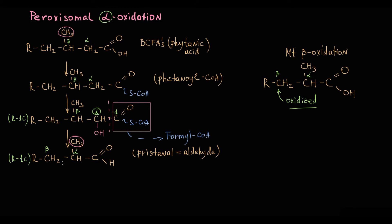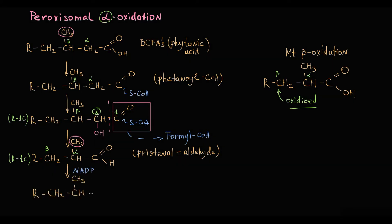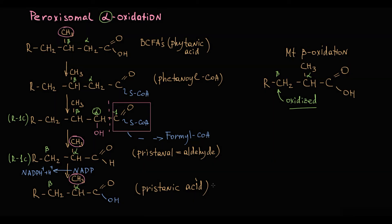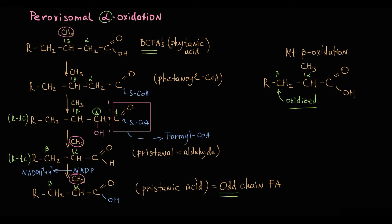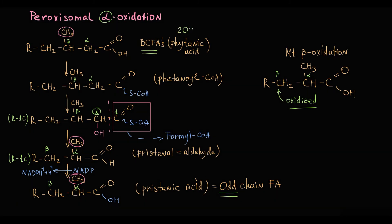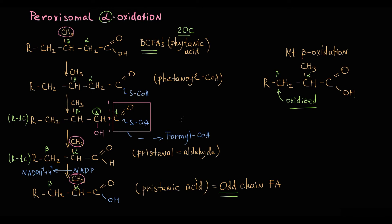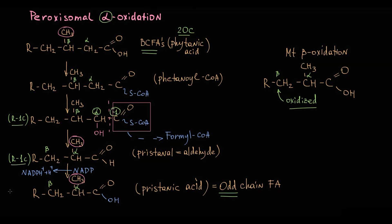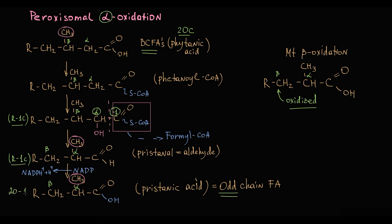To form the fatty acid, the aldehyde group is oxidized to a carboxy group, resulting in formation of pristanic acid — a fatty acid with the beta-carbon position free. Phytanic acid had 20 carbons, but after cleavage of formyl-CoA the structure becomes one carbon shorter. That is why the end product, pristanic acid, has 19 carbons, and because of that this acid is called an odd-chain fatty acid.